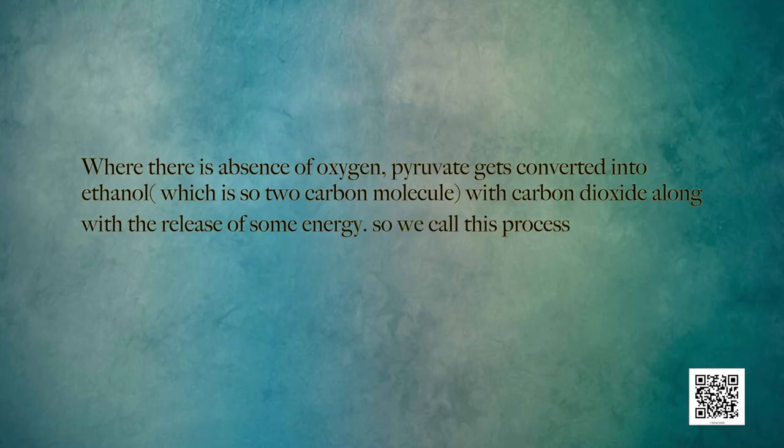After that, pyruvate can take one of three pathways depending on which organism it is present in or what kind of situation it is in. For instance, if it is present in yeast or any other anaerobic organism where there is an absence of oxygen, pyruvate gets converted into ethanol — a 2-carbon molecule — along with carbon dioxide and the release of some energy.